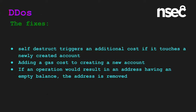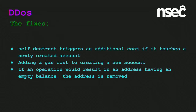The community came together around a series of fixes: the self-destruct opcode would trigger an additional cost if it touches a newly created account; a gas cost is added to the creation of a new account; and if an operation would result in an address having an empty balance, that address is removed. Once these changes were included in the protocol, core devs deployed contracts that replicate this counter-call behavior, poking each account in order starting from zero and prompting the protocol to notice they're empty and delete them. Sadly, this slowed down the network as much as the DDoS itself.